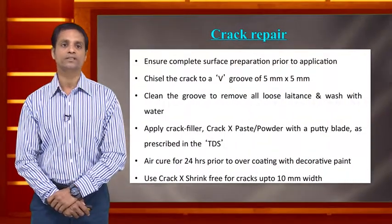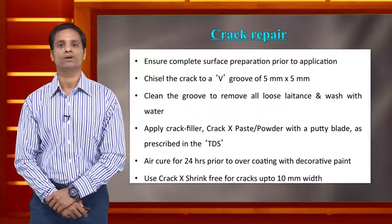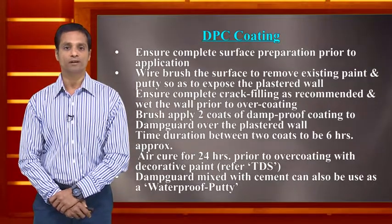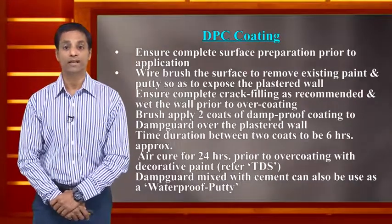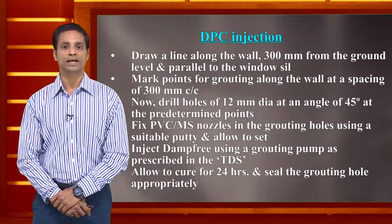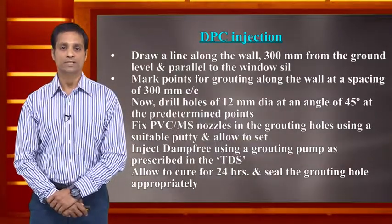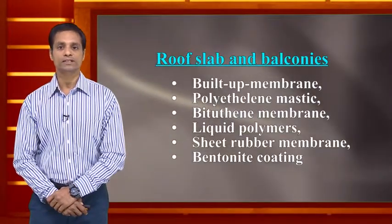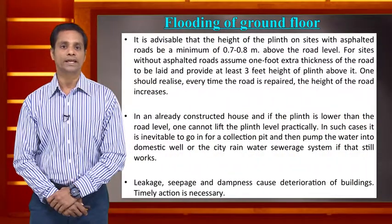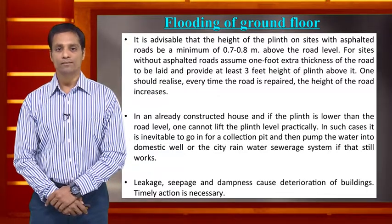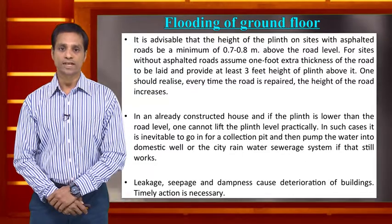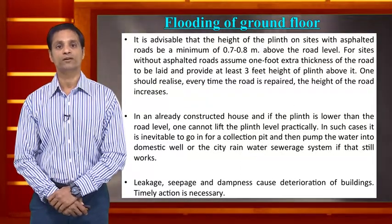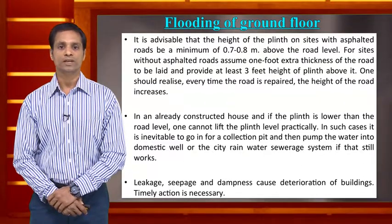Crack repairs are available since cracks are major sources of seepage. Roof coatings such as DPC coatings can be applied following specified procedures. Chemical injections can be made inside walls — drilling holes and injecting chemicals into walls three to six meters long. Roof insulations are also available. Flooding of the ground floor is a major challenge when the road level is higher than the plinth level of the home — this must be accounted for during construction.